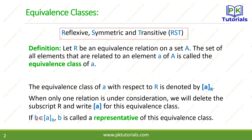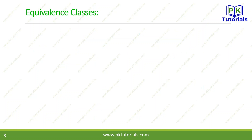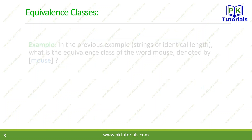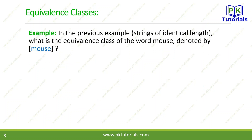If B is a member of this class, then we can say B is a representative of the equivalence class. Here we have a set of elements, and an equivalent relation R as an example in class.